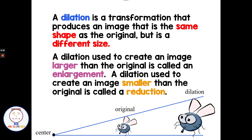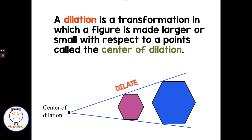A dilation is a transformation that produces an image that is the same shape as the original but is a different size. We have two types of dilations: an enlargement, which creates an image larger than the original, and a reduction, which creates an image smaller than the original. A dilation is a transformation in which one of the figures is made larger or smaller with respect to a point called the center of dilation.